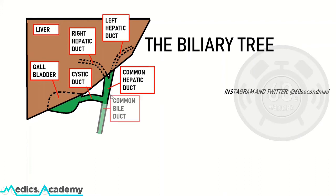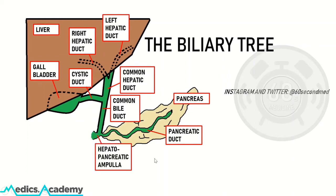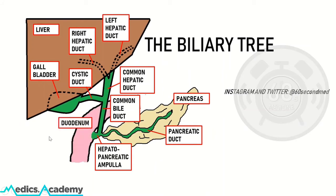The common hepatic duct and the cystic duct unite to form the common bile duct. Secretions from the pancreas drain via the pancreatic duct to meet the common bile duct at the hepatopancreatic ampulla. All these secretions then flow into the duodenum — more specifically, into the second part of the duodenum.